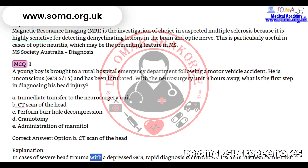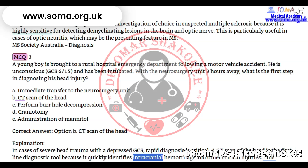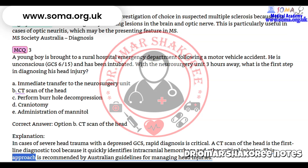Correct answer: Option B — CT scan of the head. Explanation: In cases of severe head trauma with a depressed GCS, rapid diagnosis is critical. A CT scan of the head is the first-line diagnostic tool because it quickly identifies intracranial hemorrhage and other critical injuries. This approach is recommended by Australian guidelines for managing head injuries.